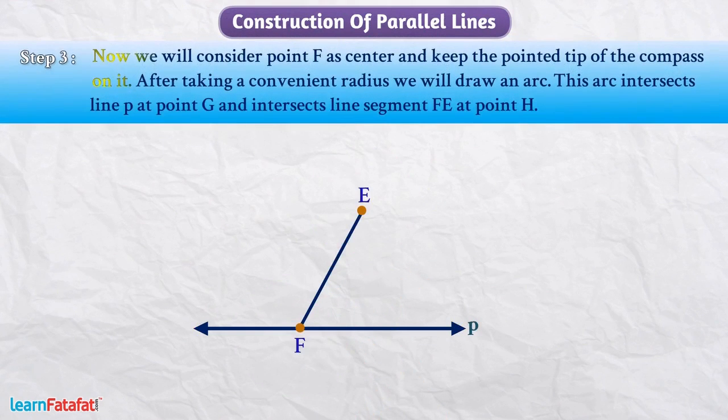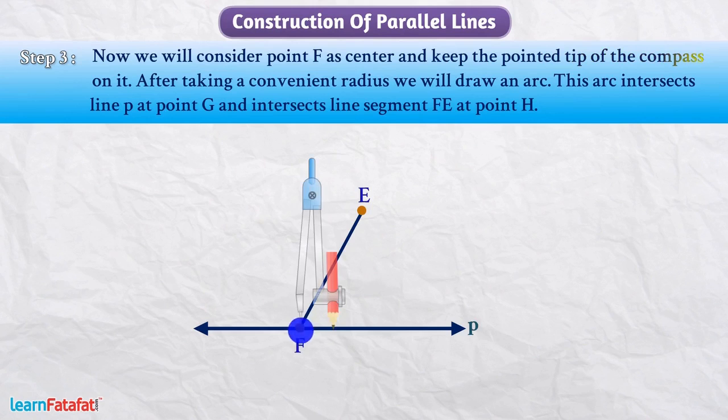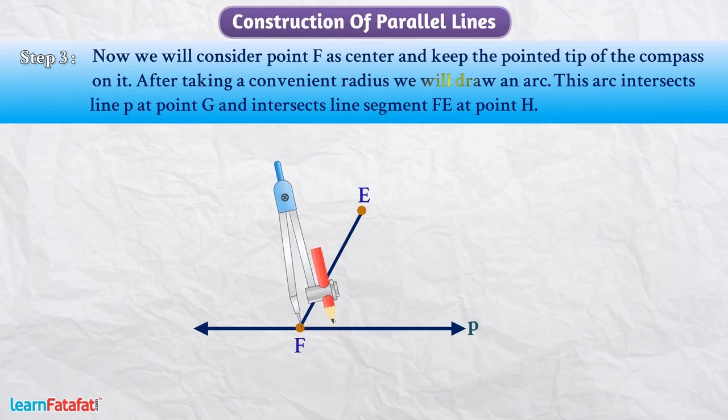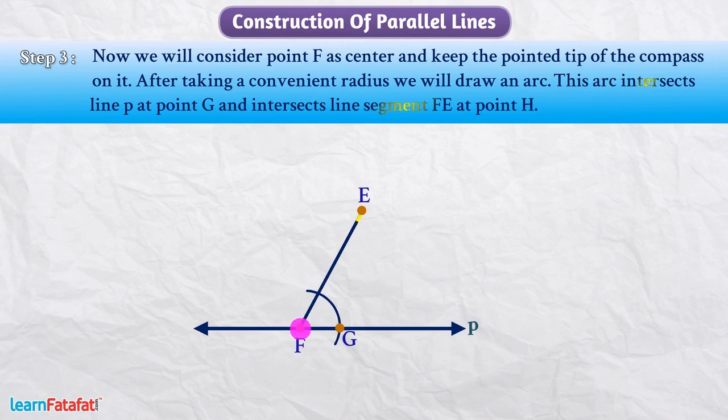Now, we will consider point F as center and keep the pointed tip of the compass on it. After taking a convenient radius, we will draw an arc. This arc intersects line P at point G and intersects line segment EF at point H.